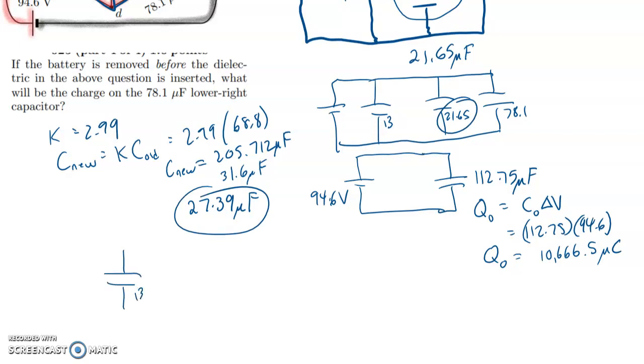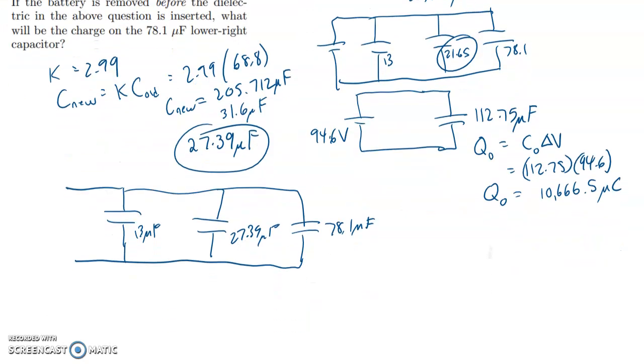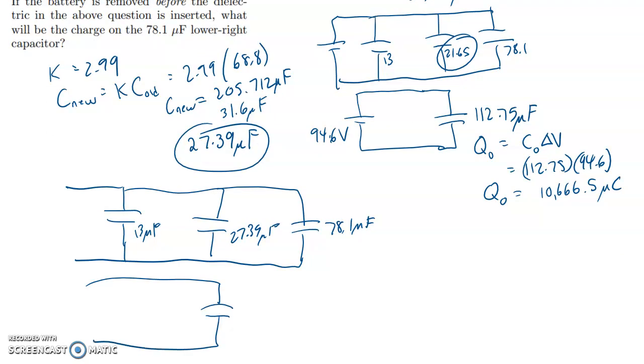Let me just redraw this so it's not too confusing. So we still have the 13 microfarad. Now we have a 27.39 microfarad. And we still have the 78.1 microfarad. And by the way, they're not connected to a battery anymore. But we can still find the equivalent capacitance of those three. They're parallel. So we nearly add them together.